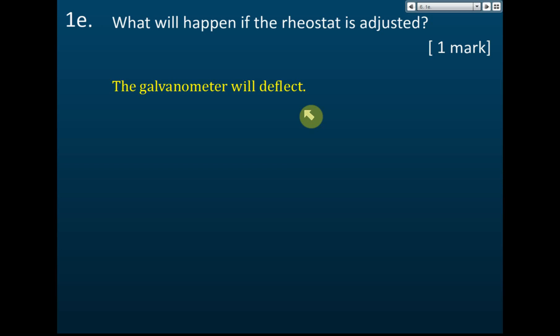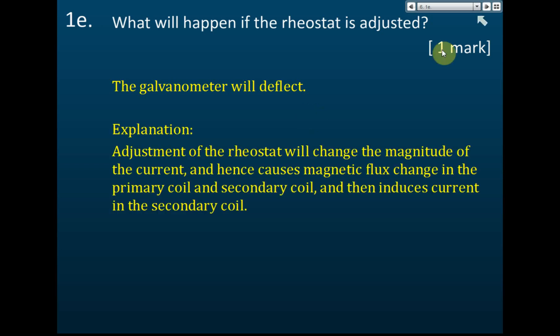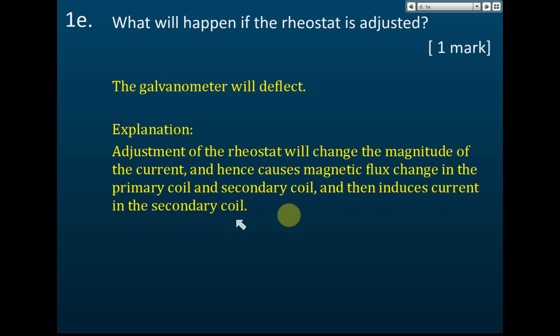When you turn on the switch, the galvanometer deflects and goes back to zero. If you then change the current with the rheostat, the galvanometer will deflect again. The explanation: adjustment of the rheostat changes the magnitude of the current and hence causes magnetic flux change in both the primary and secondary coil, which induces current in the secondary coil.